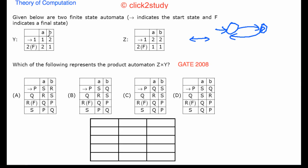To interpret the table: if you are in state 1 and read symbol A, you remain in state 1. If you are in state 1 and read B, you go to state 2. In state 2, reading A keeps you in state 2, and reading B takes you back to state 1. That's how the table is read.